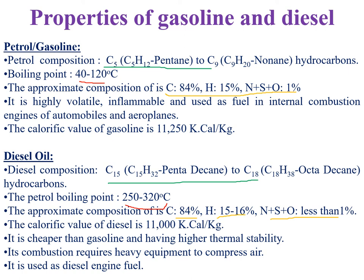Diesel also has similar composition but slightly higher hydrogen at 15 to 16% and less than 1% impurities. The calorific value of gasoline is 11,250 kilocalories per kg, and diesel's calorific value is slightly less. Diesel has higher thermal stability because its boiling point is 320 degrees centigrade. They require different types of engines: petrol or gasoline is used in internal combustion engines like motor vehicles, while diesel is used in heavy vehicles like trucks with diesel engines. Diesel costs comparatively less than petrol.